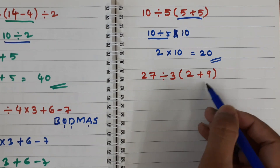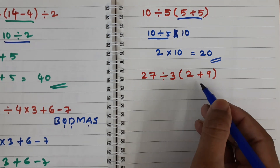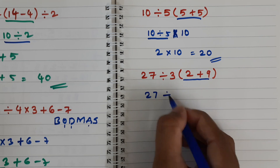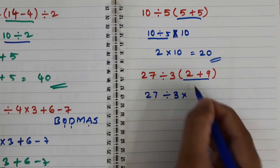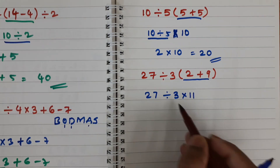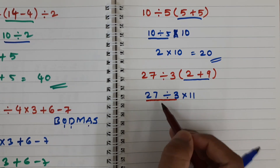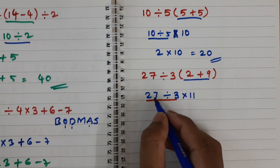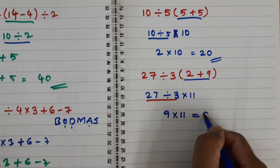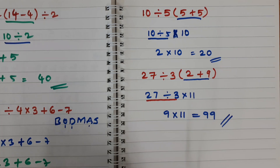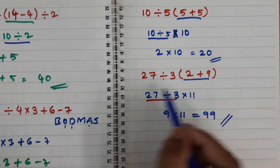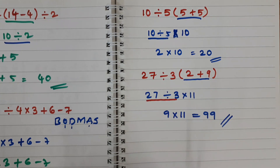Here is one more expression you may have seen in this video's thumbnail. Let us solve it using BODMAS. First solve the bracket: 2 plus 9 is 11. No order of. Division: 27 divided by 3 is 9. Multiplication: 9 into 11 is 99. So the answer is 99. See how simple it is using BODMAS.